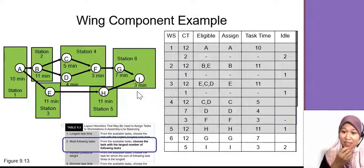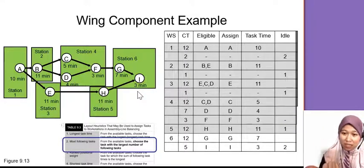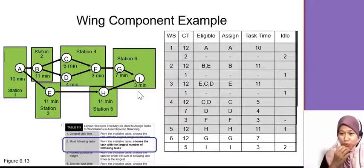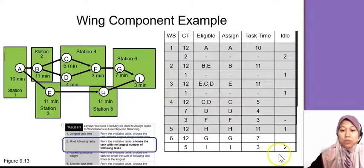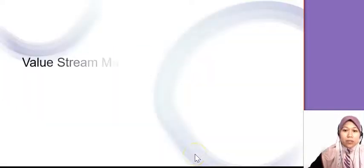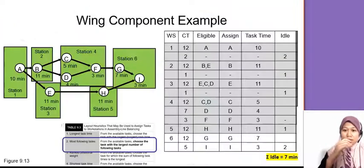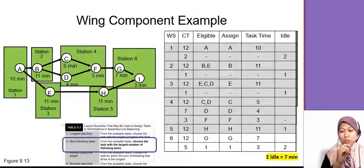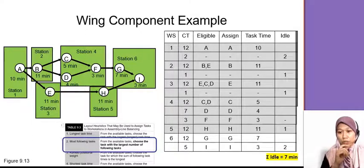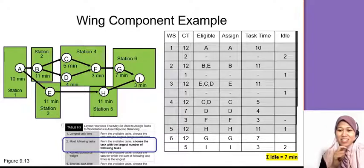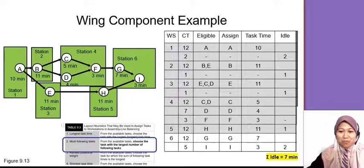You calculate just now. So it's tally, right? Theoretical is the same as the actual. Don't forget to sum the idle time. In this case is 7 minutes. That's all for the line balancing. I will give you a tutorial later on, two more questions on this line balancing. I see you in the tutorial video. Bye.